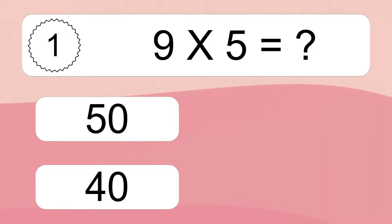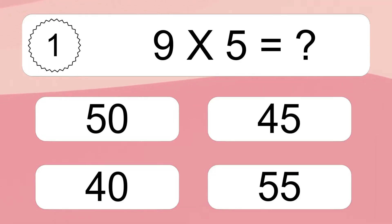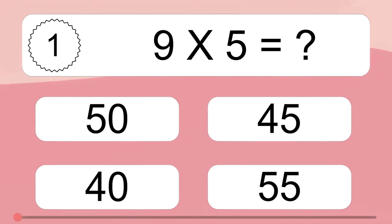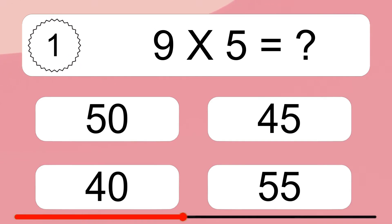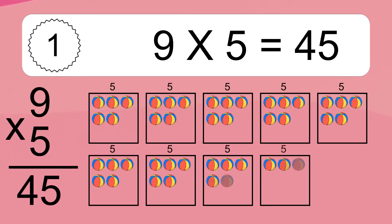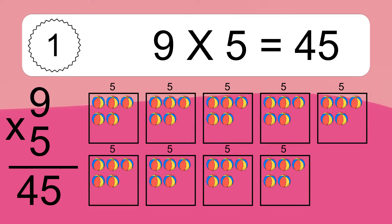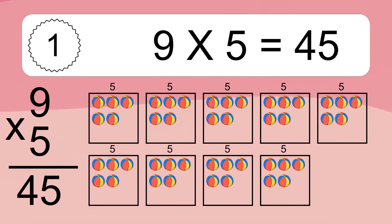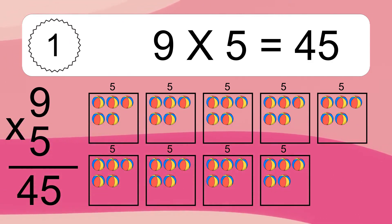Nine times five equals what? Nine times five equals 45. We have nine boxes and each box has five colorful balls inside. If you count all the balls in all the boxes together, you will have nine times five balls. This equals 45 balls.